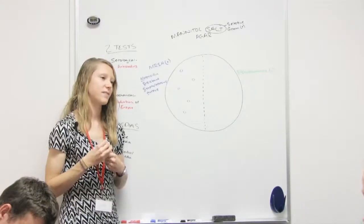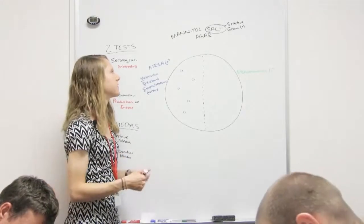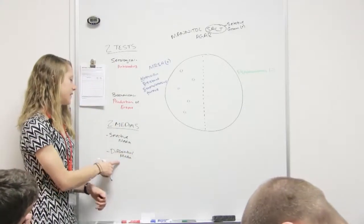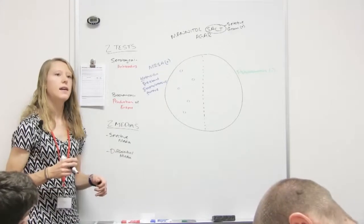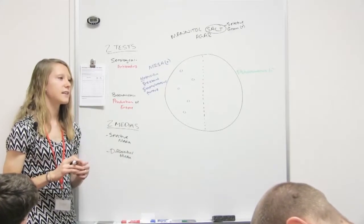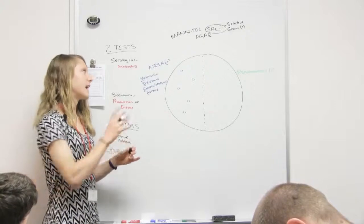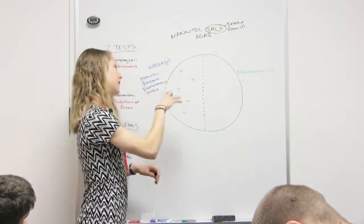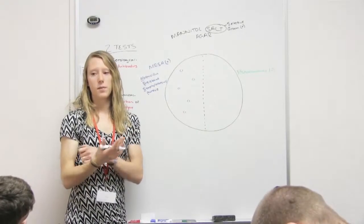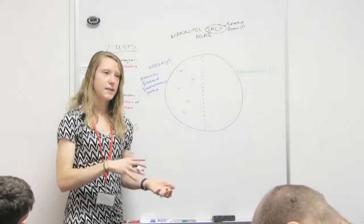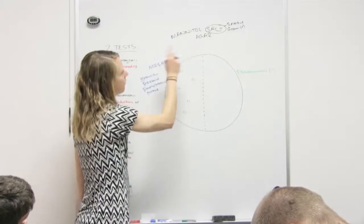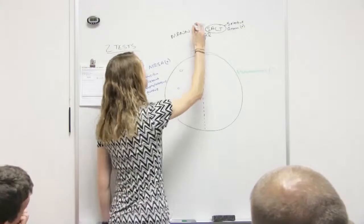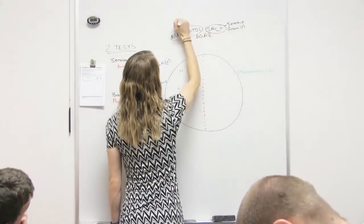It's also differential. What's the definition of a differential media again? I want to be able to see a difference. Let's say I had two gram positive bacteria on here. Obviously they can both grow because they're gram positive. They're not inhibited by the salt. But what have we not talked about up here yet? The mannitol, right? So guess what makes this differential? The mannitol.